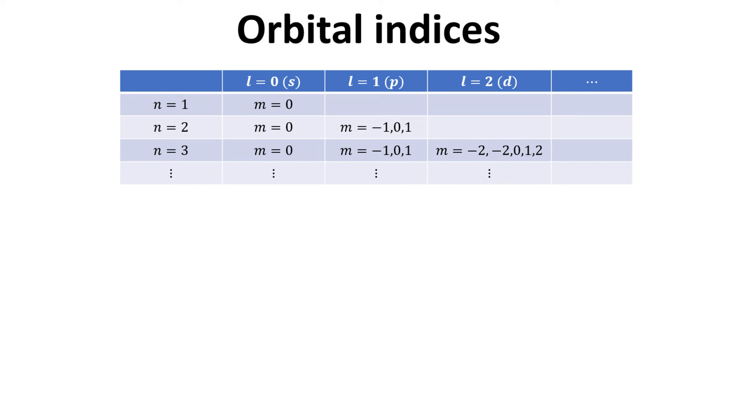Before we proceed with the visualization of the orbital wave functions, let's remind ourselves again how the quantum numbers n, l, and m are ordered. The quantum number n runs from 1, 2, 3, and so on. For each n, we have the quantum number l that runs from 0 to n minus 1. Lastly, for each l, we have the quantum number m that runs from minus l to plus l.